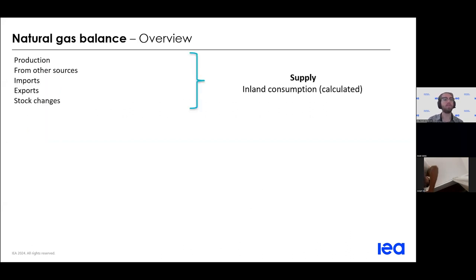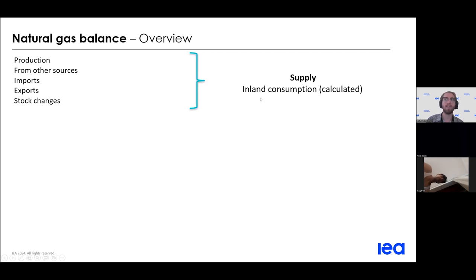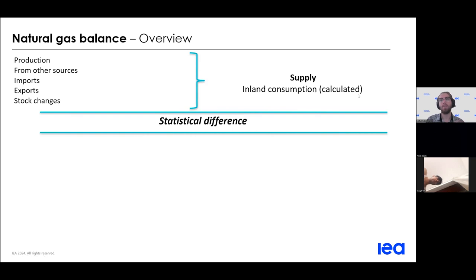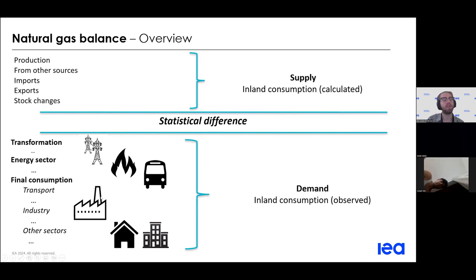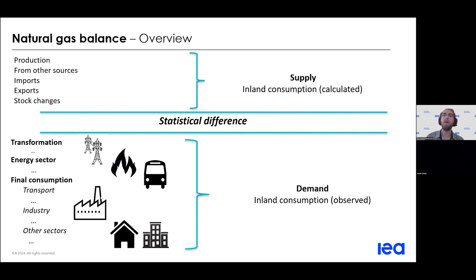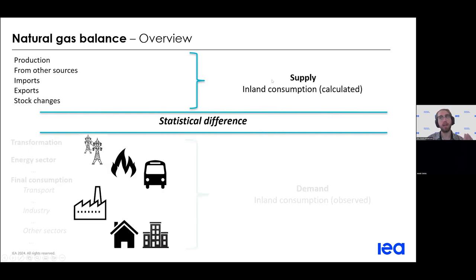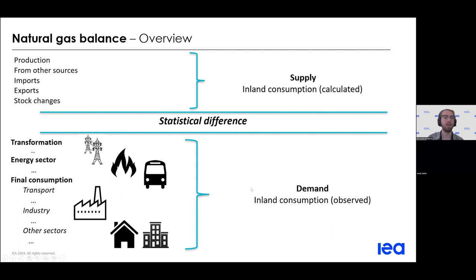Moving on to a brief overview of the natural gas balance, starting with the supply side: we have production, imports from other sources and other types of gases, trade with imports and exports, and of course stock changes. From the supply side we derive the inland consumption calculated. Then we have the statistical difference, which is the difference between the supply side and the data from the demand side — the inland consumption observed — where we have consumption in all the different end-use sectors: transformation, energy sector, transport, and industry. Efforts should be made to minimize statistical difference to ensure that the data from the supply side of the energy balance matches the data from the demand side.